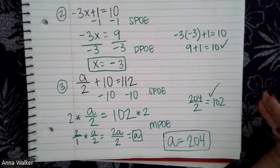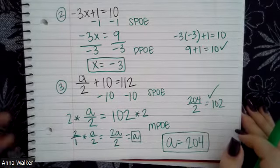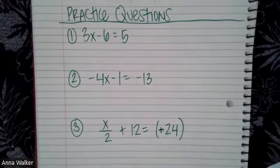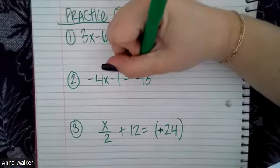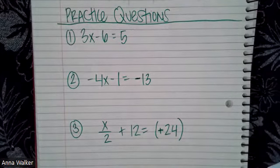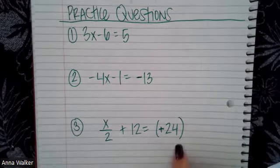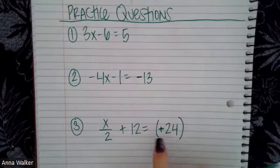In the next video, we're going to see what I like to call some weird equations. But before we move on, here are your practice questions for today. There are three two-step equations to solve: three X minus six equals five; negative four X minus one equals negative thirteen; and X divided by two plus 12 equals positive 24. That last one just says positive 24 — you don't need to write the plus sign and parentheses.